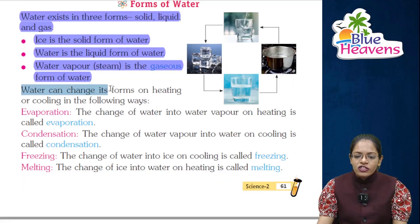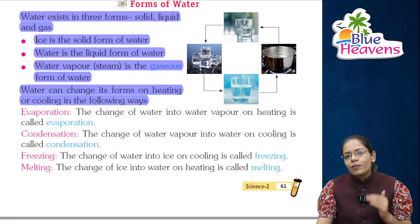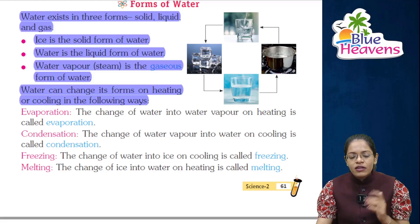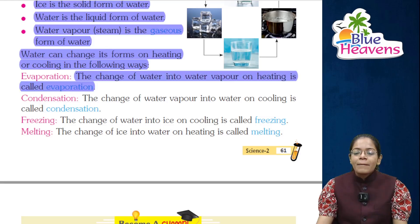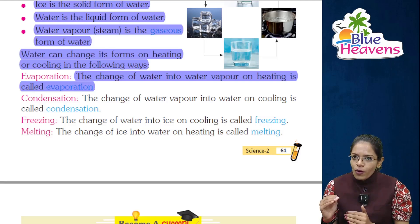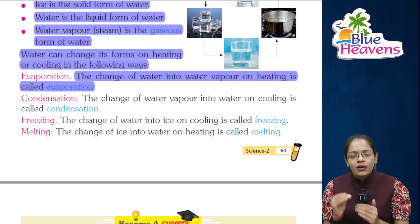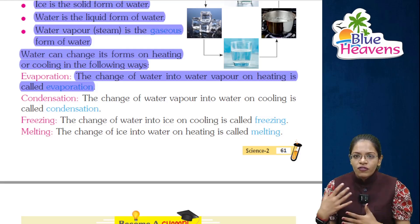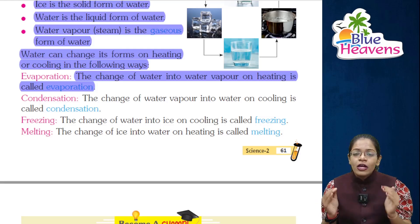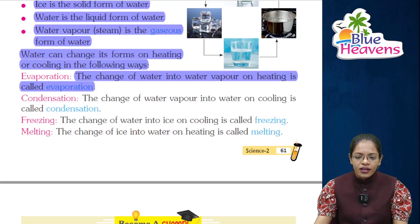Water can change its forms on heating or cooling. The first process is evaporation — the change of water into water vapor on heating is called evaporation. If you boil water, all the water changes into water vapor on heating. That process is called evaporation.